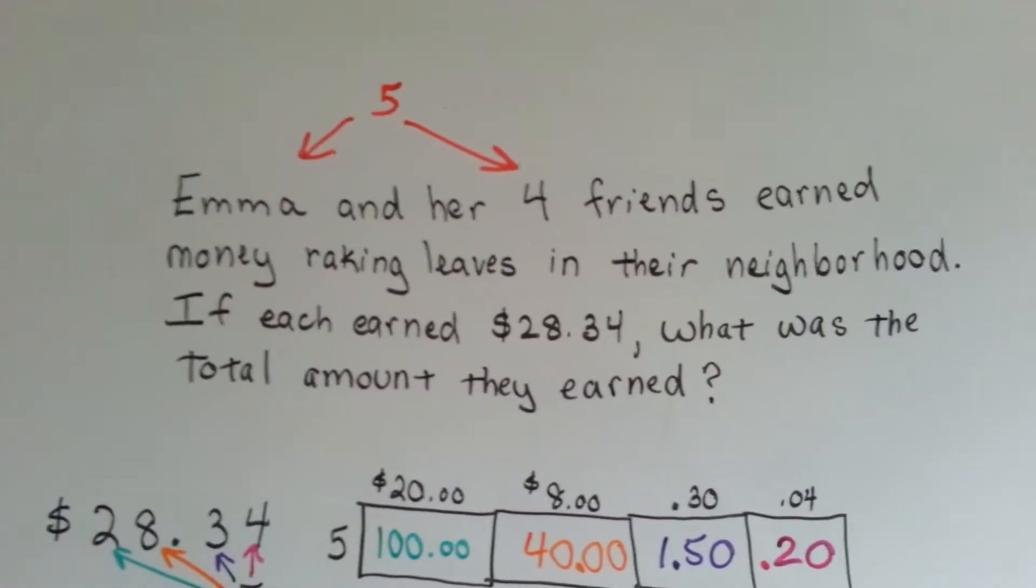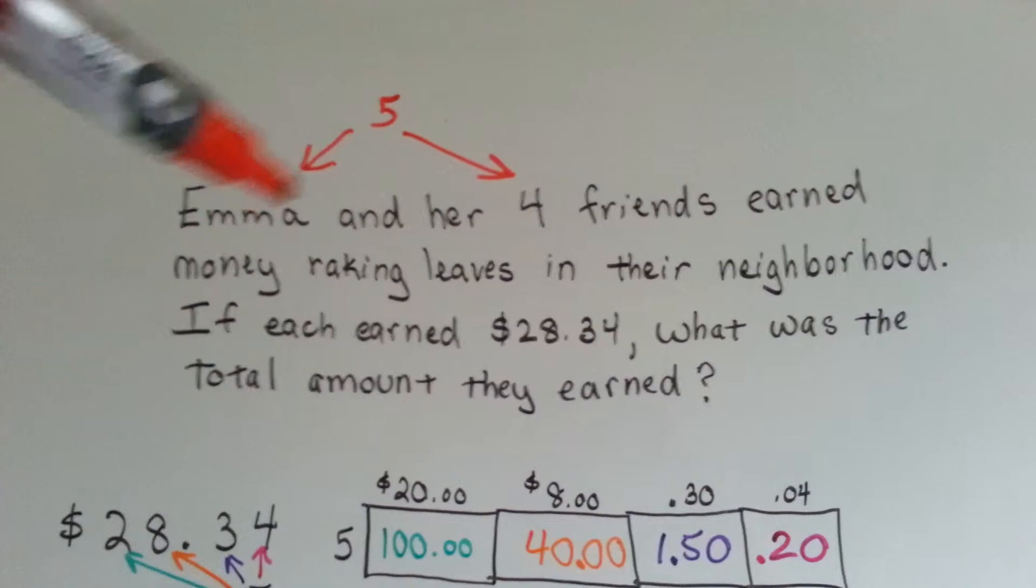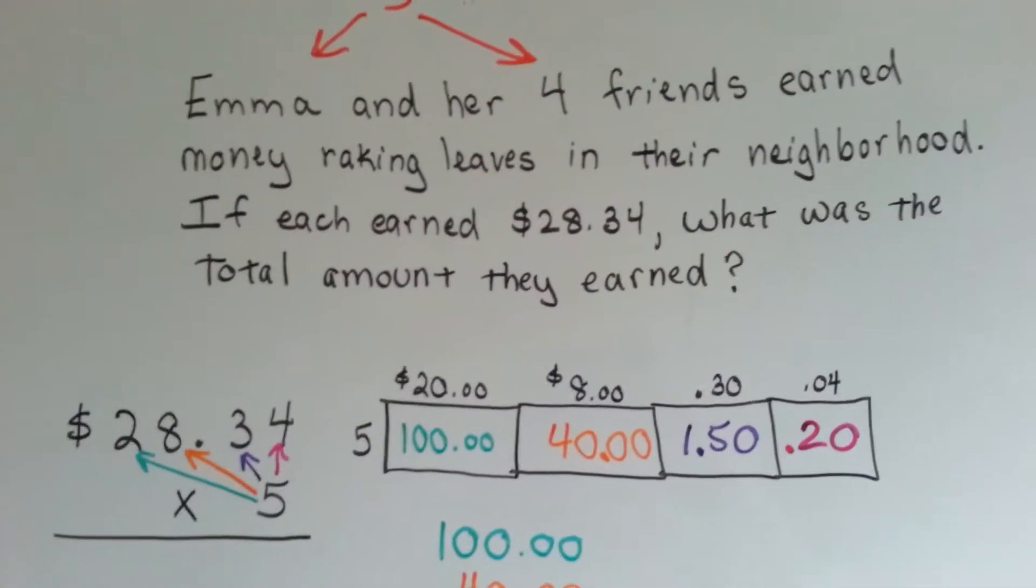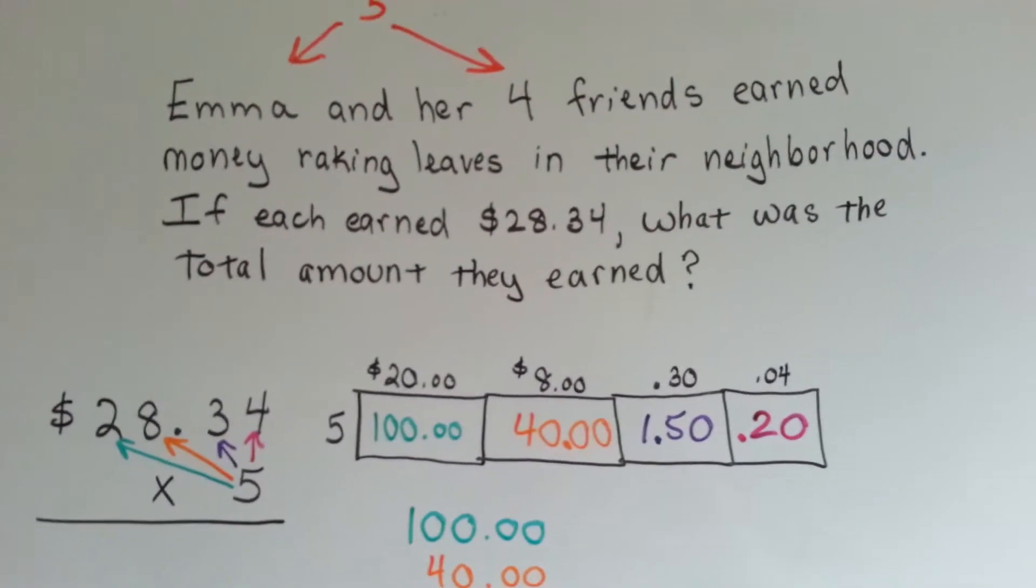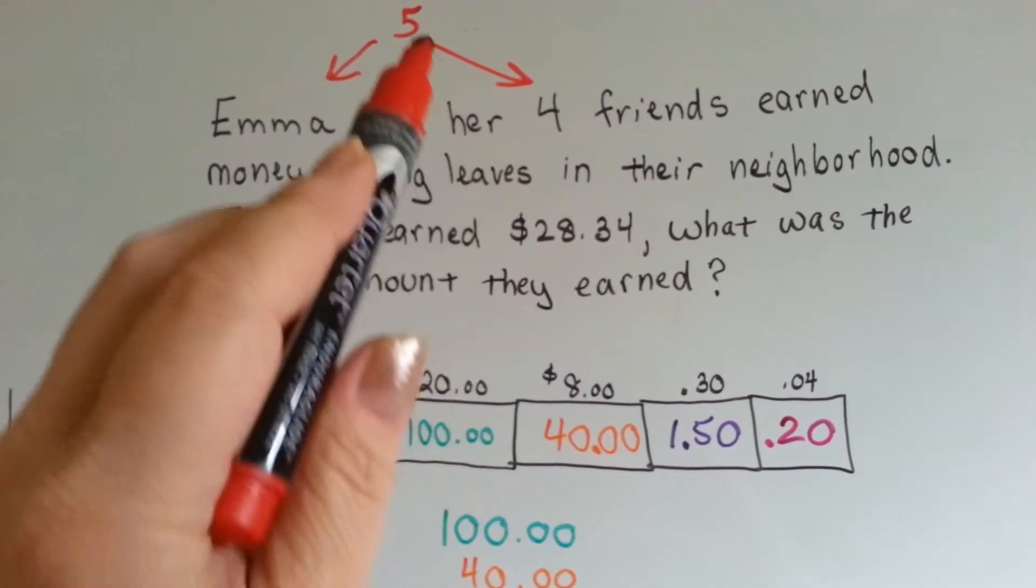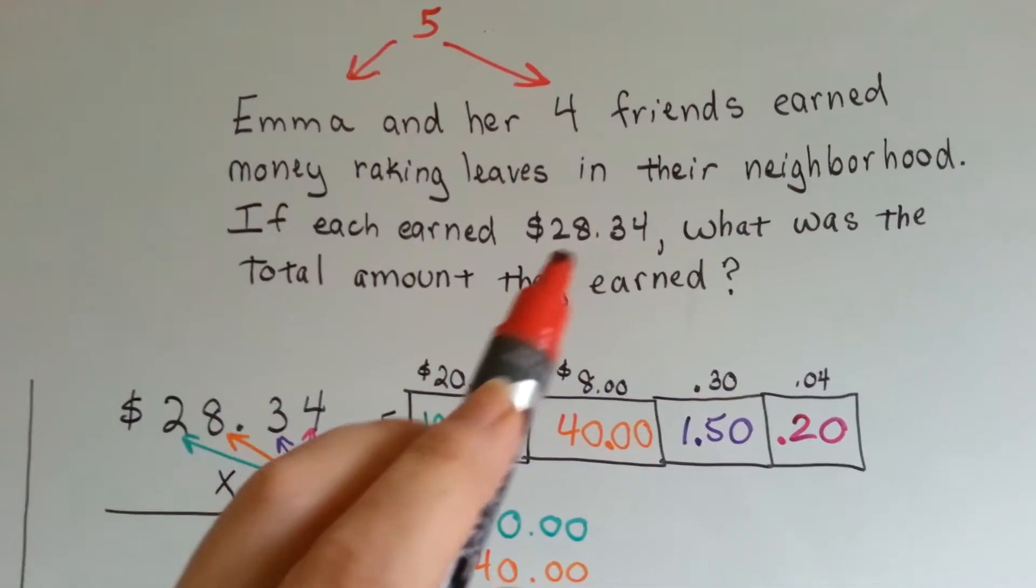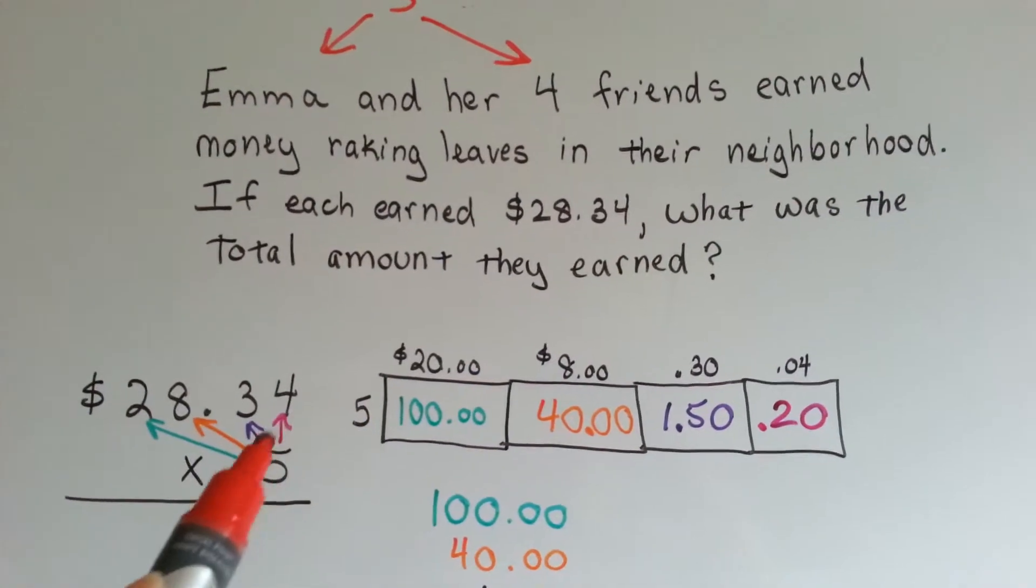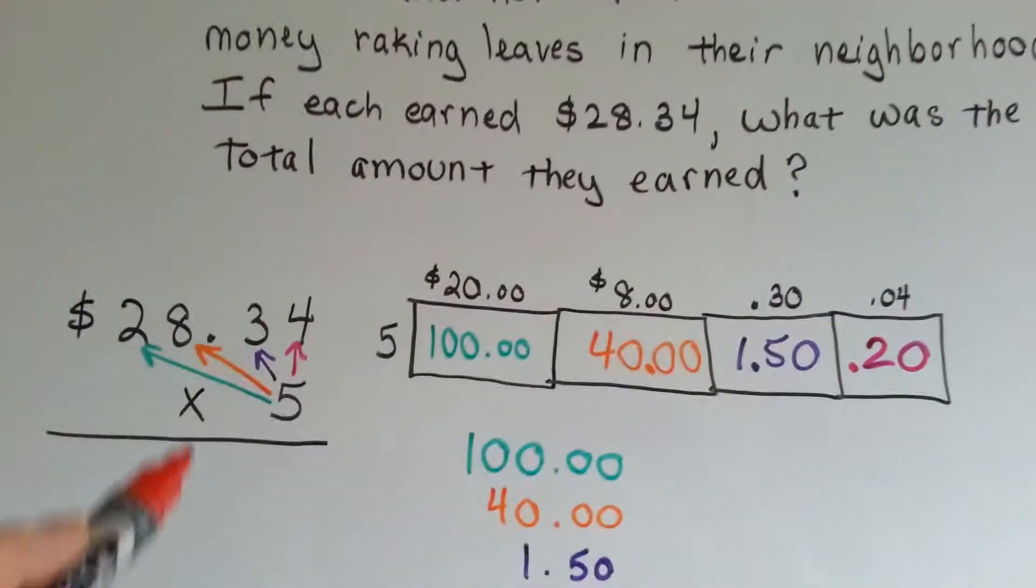So, there's 5 people because it's Emma and her 4 friends. So, we're going to ask, what is $28.34 times 5? Because there's 5 people. Then we'll know the total of what they earned.